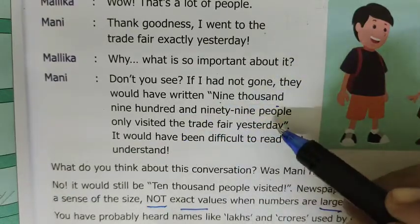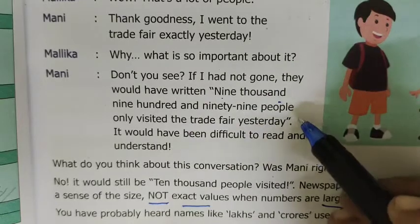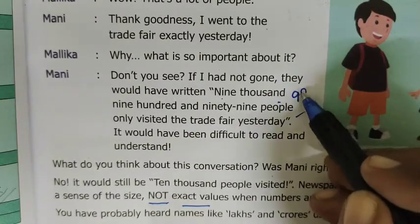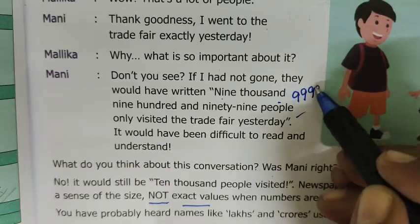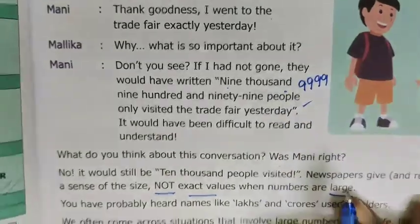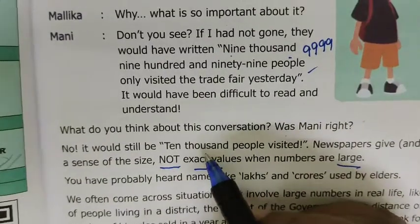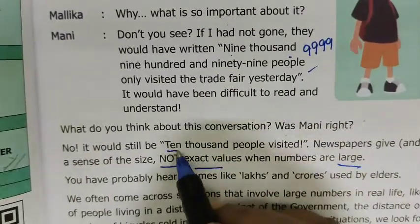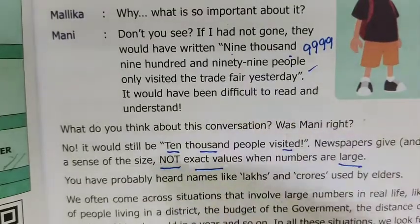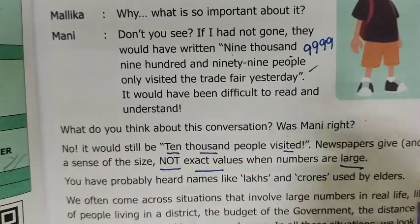For example, 9,999 people visited the trade fair yesterday. We will see this first chapter on this topic. When numbers are large, we do not always use exact values.